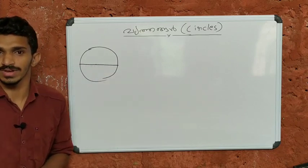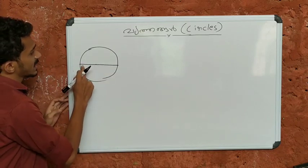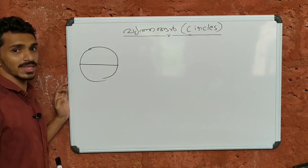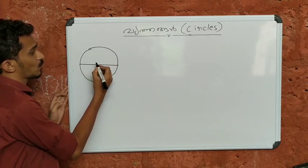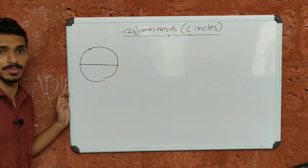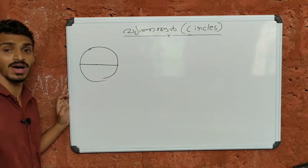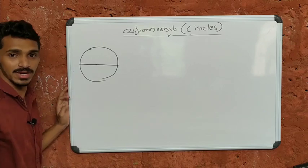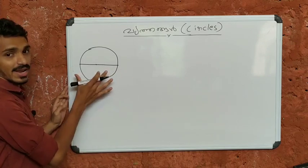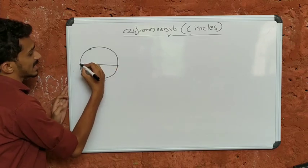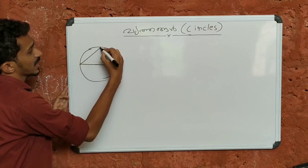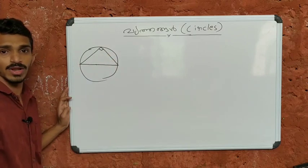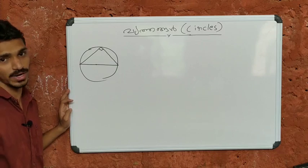Here, I am going to add a Vrith — that is, a circle. I am going to add a Vyasa — that is, a diameter. When we add a Vyasa, we call it Vyasa. That is why we add a circle with a diameter. The diameter is already about 180 degrees.